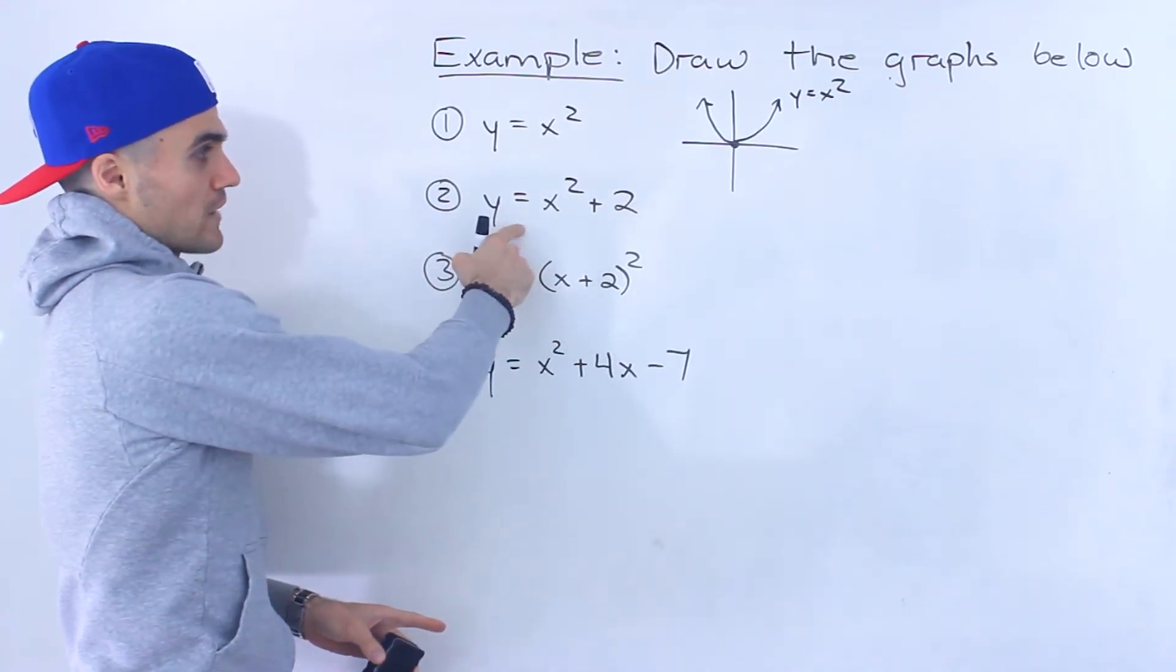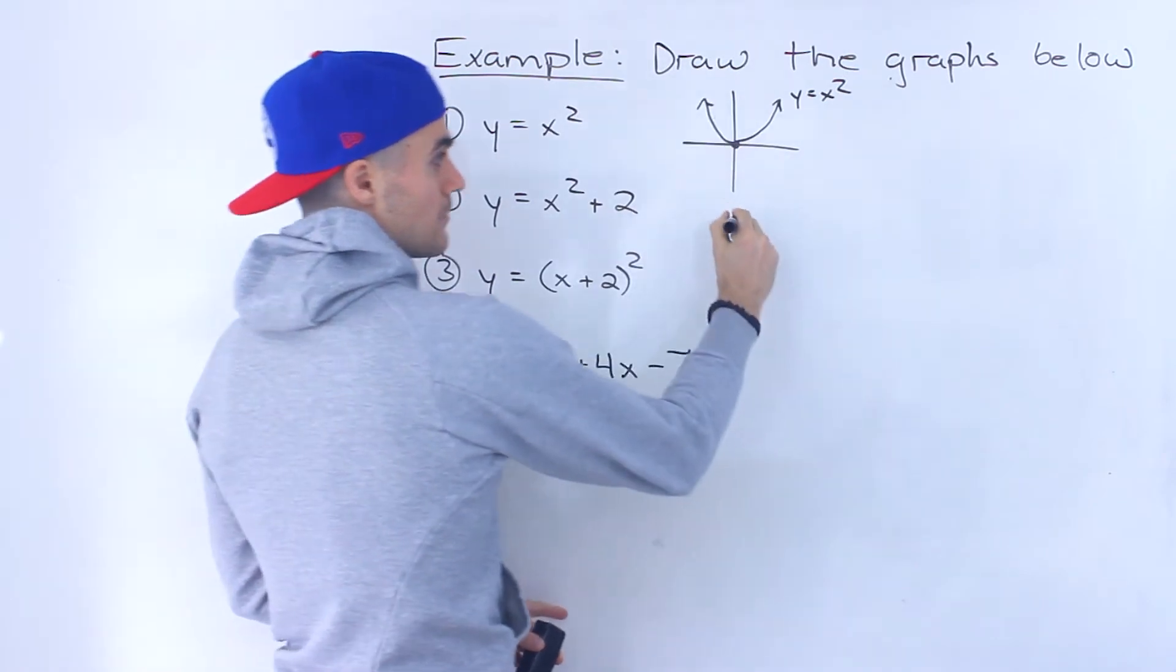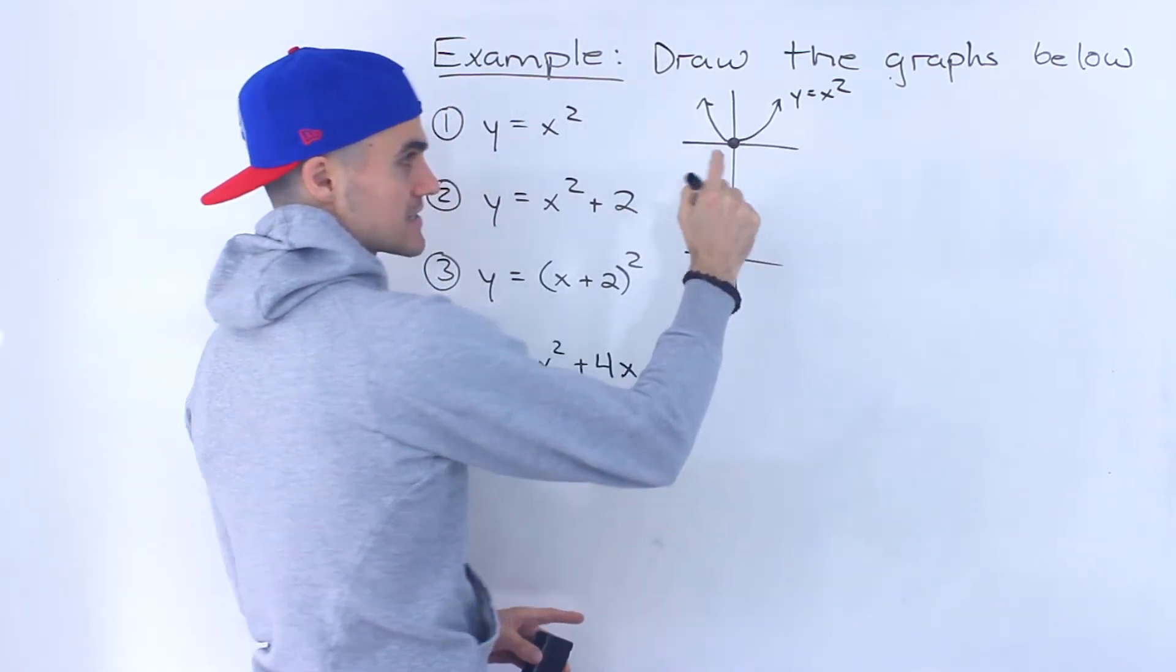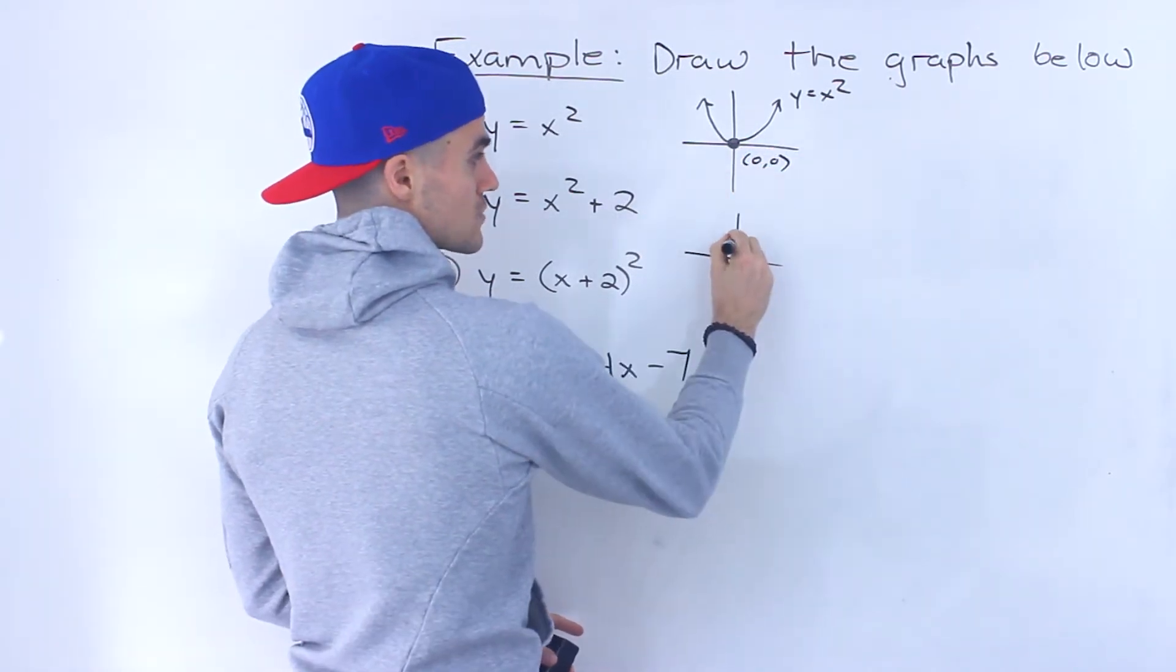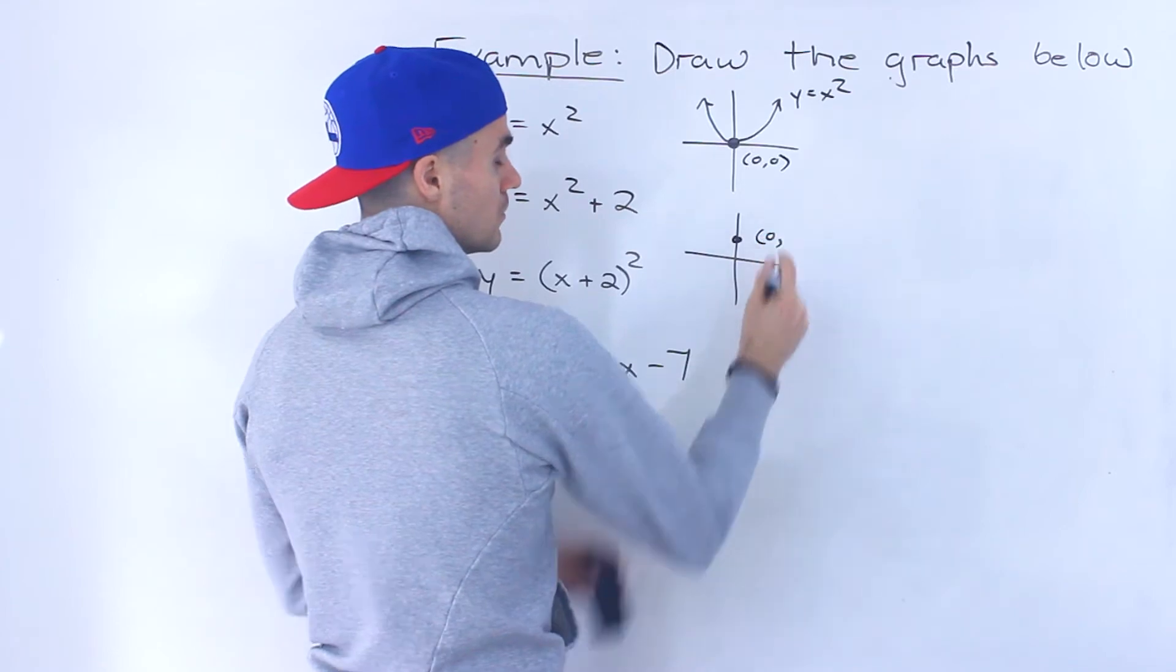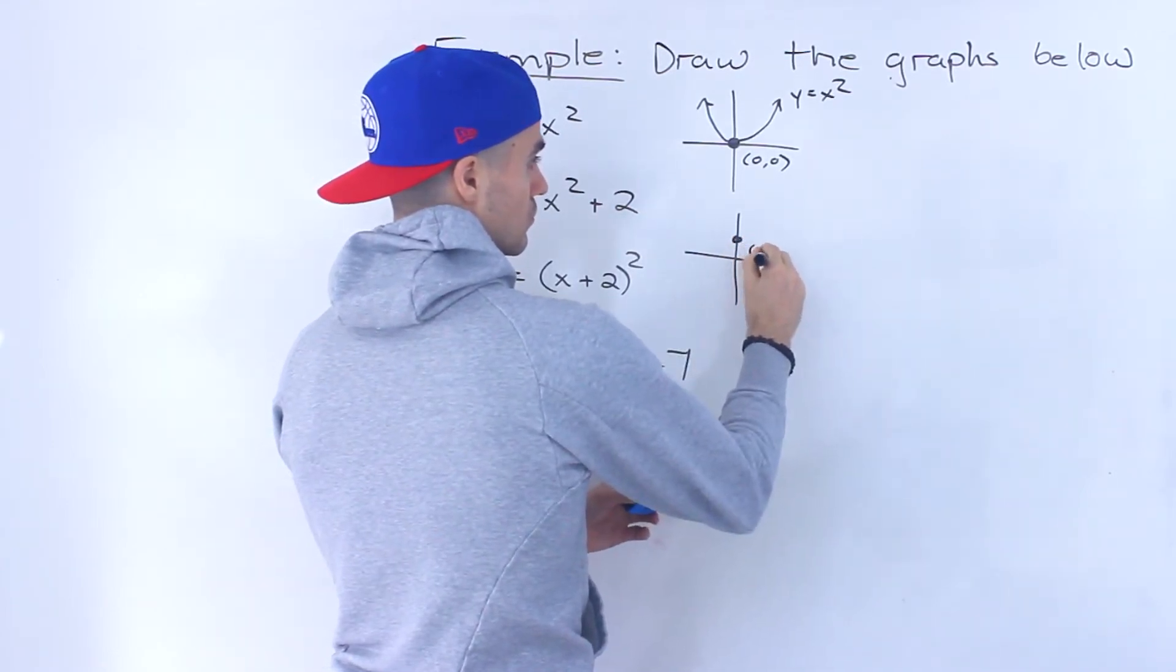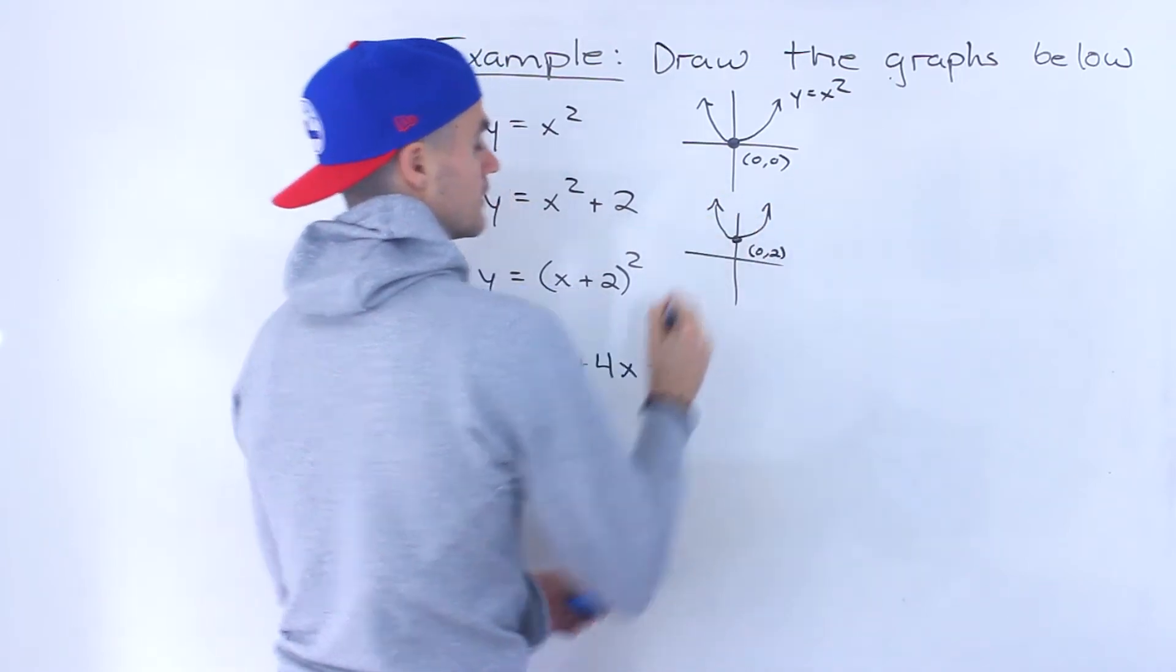This second graph, y equals x squared plus two, is basically this graph here, but just shifted up by two units. So instead of having the vertex at zero and zero, we're now going to have the vertex over here at zero and two. So it's going to look something like that.